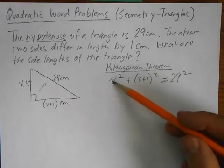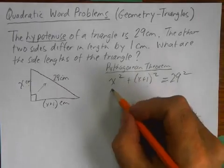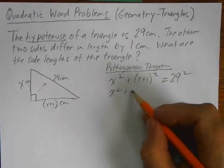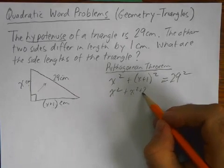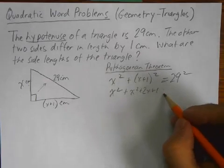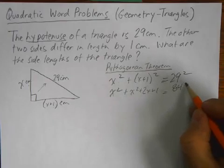For the value of X, what value of X makes this true. So we're going to expand this. We're going to get X squared plus 2X plus one, not just X squared plus one, equals 29 squared. 29 squared is 841.